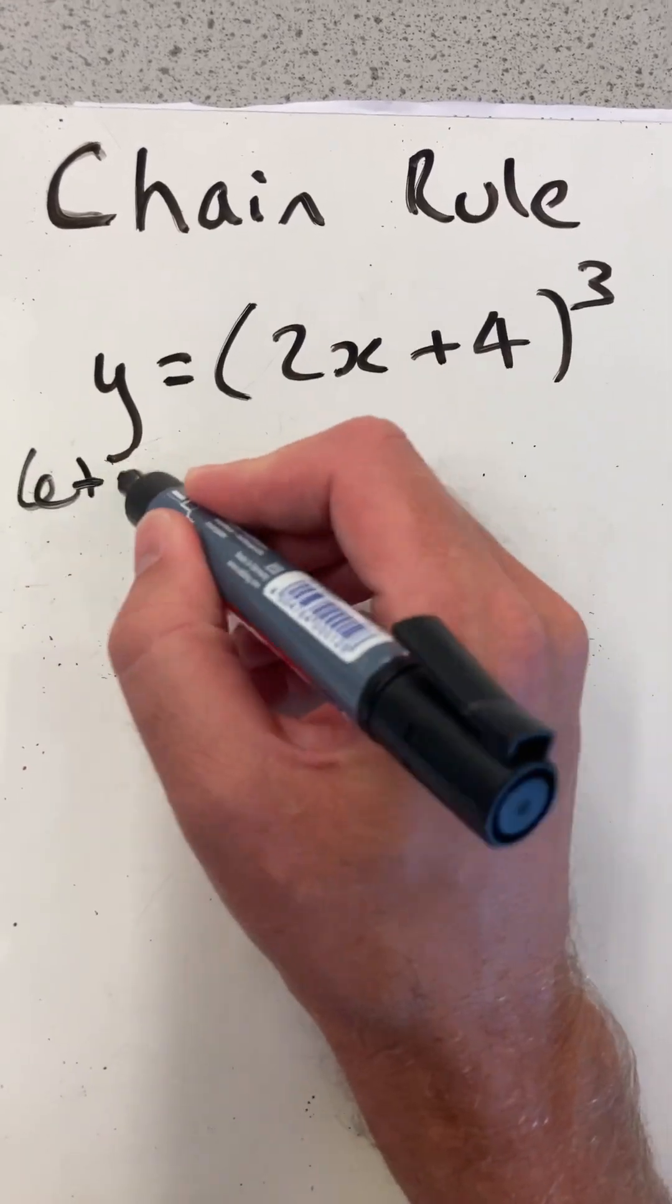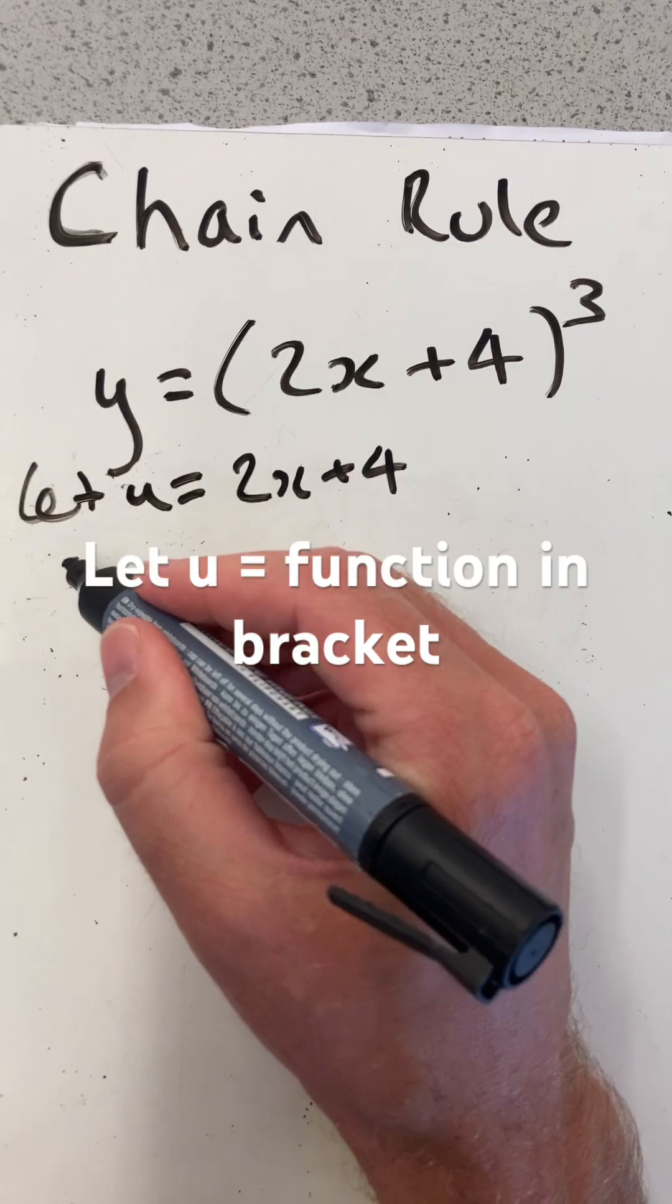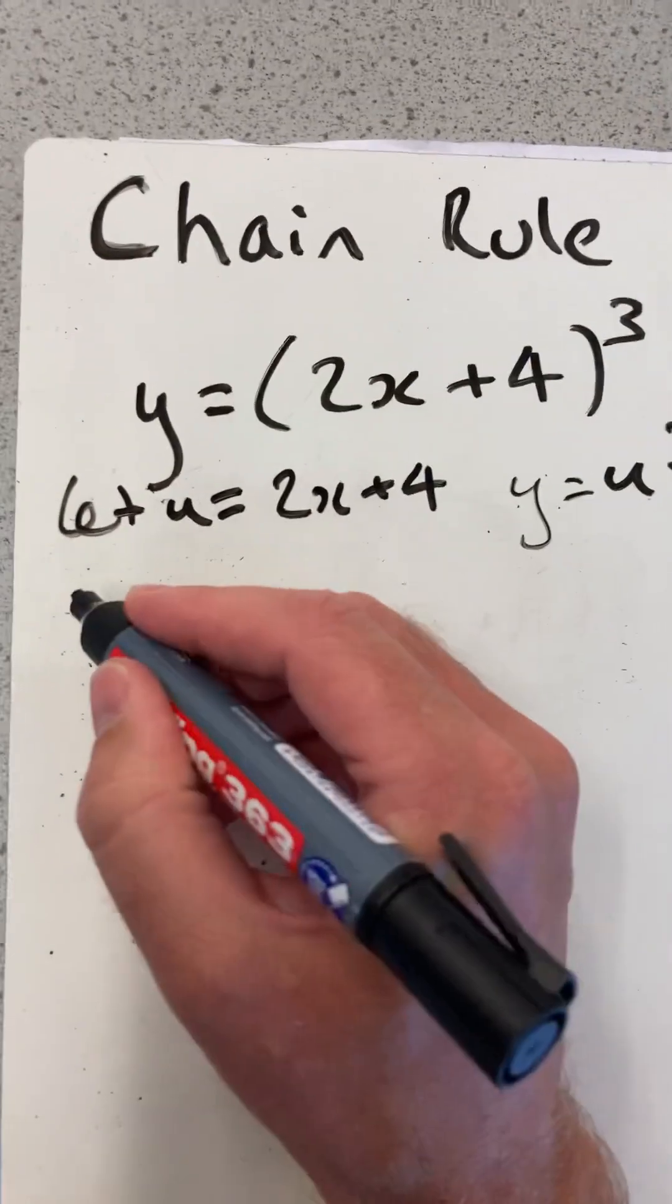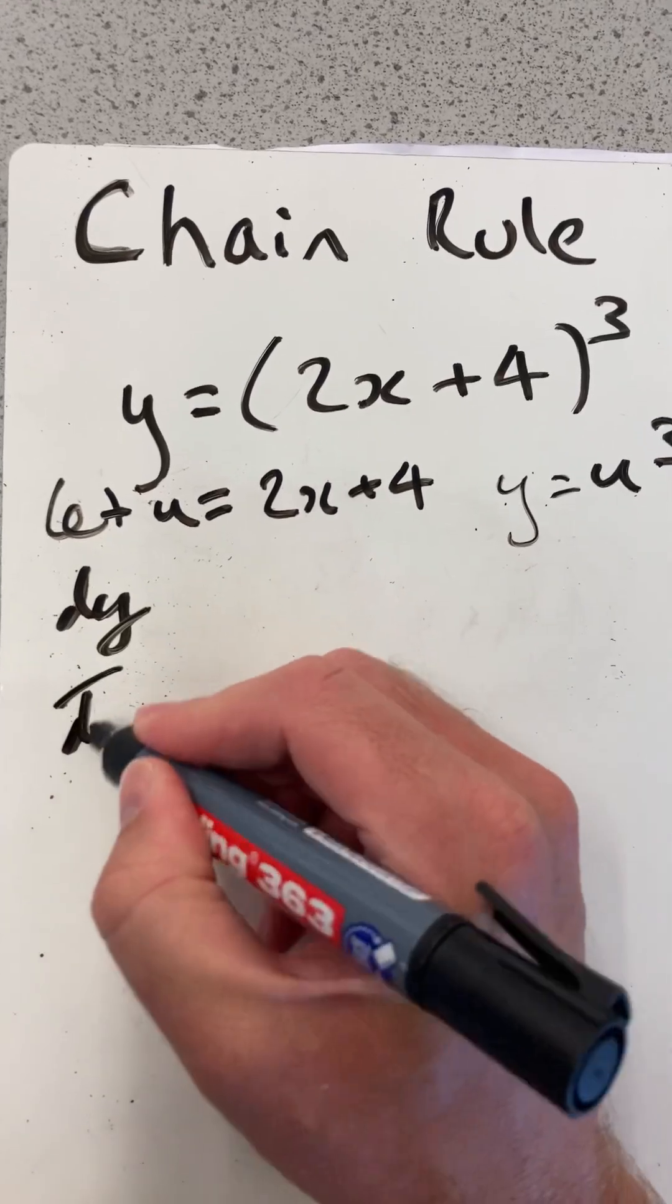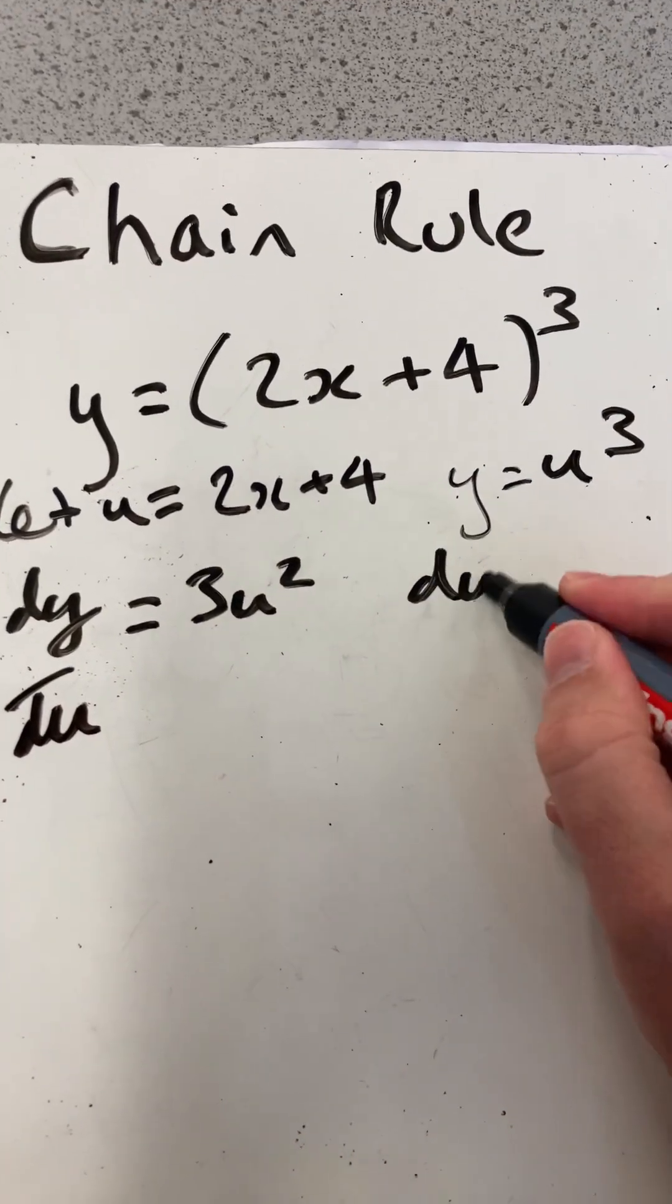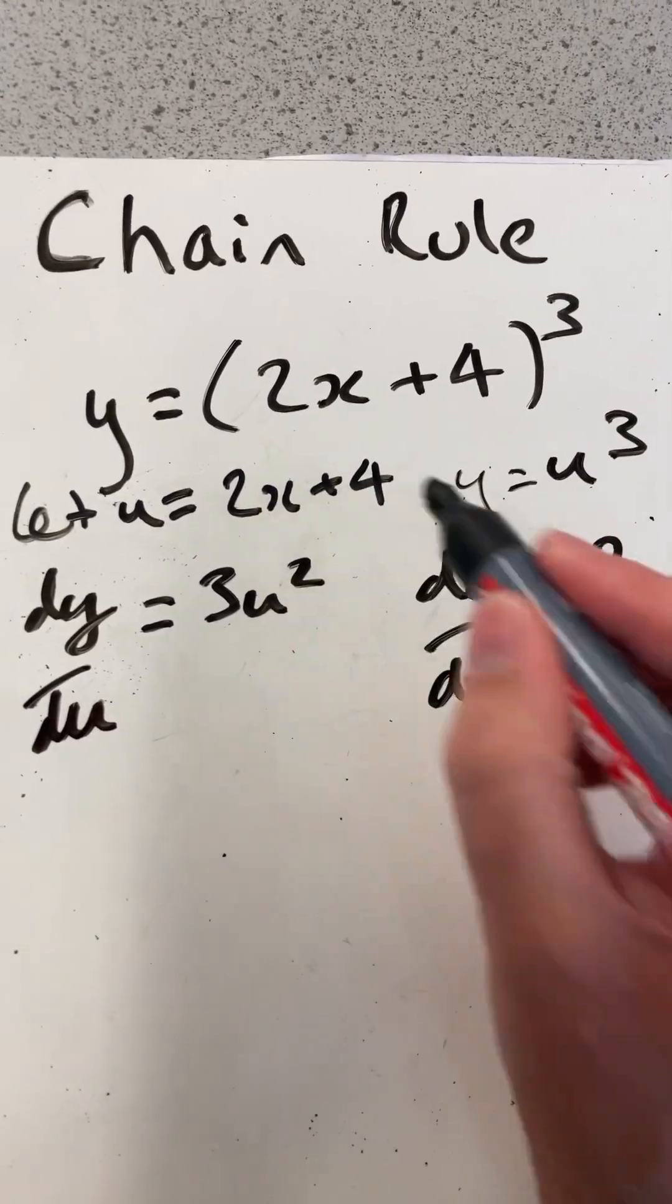So what we're going to do is let u equal 2x plus 4. Then we're going to say that y is now equal to u cubed. So dy/du will equal 3u squared, and du/dx will equal 2, just differentiating that on its own.